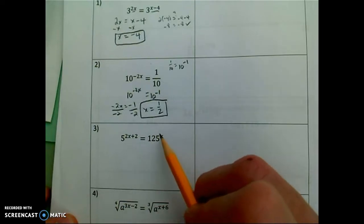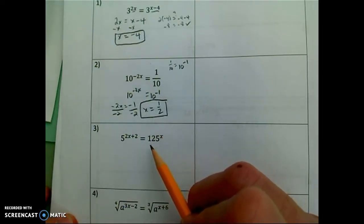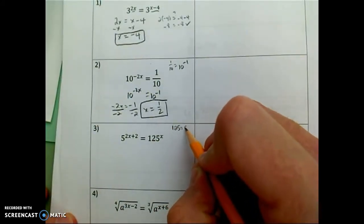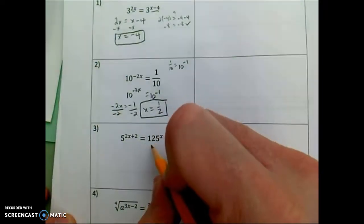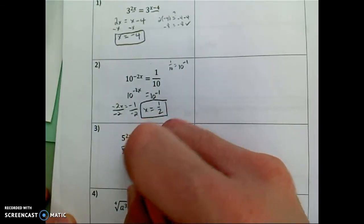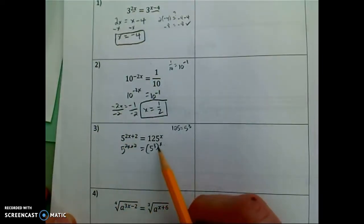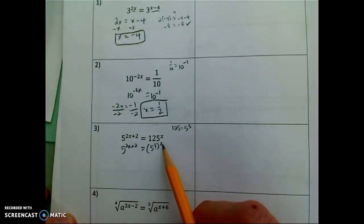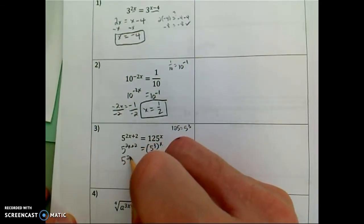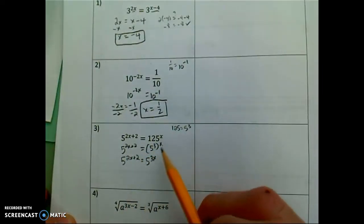So I need to ask myself, is there some way I can rewrite this equation, this expression, 125 to the x power, so it has a base of 5? Well let's remind ourselves, 125 is equal to 5 to the 3rd. So I'm going to rewrite 125 as 5 to the 3rd and we'll raise that to the x power. Right hand side 5 to the 2x plus 2. Great. I still need to simplify on the right hand side. 5 to the 3rd to the x. Remembering from algebra 1 reminding ourselves that when we raise a power to a power we can multiply the exponents. 3 times x is 3x.